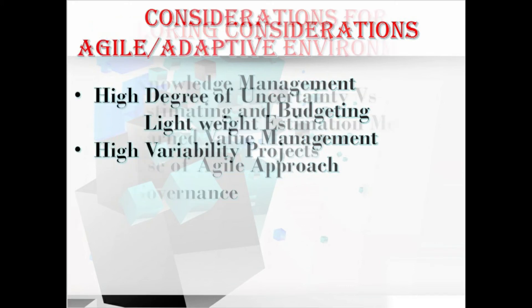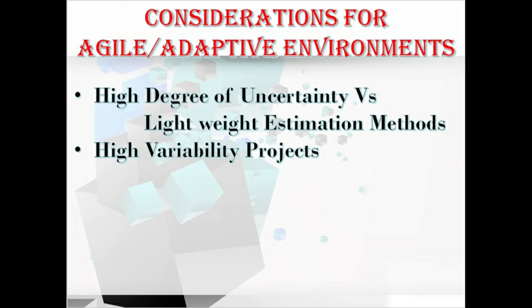Let's look at considerations for agile or adaptive environments. Projects with a high degree of uncertainty — where scope is not yet fully defined — may not benefit from detailed cost calculations due to frequent changes. Instead, lightweight estimation methods can be used to generate fast, high-level forecasts of project labor costs, which can be easily adjusted as changes arise. For high variability projects that are subject to strict budgets, the scope and schedules are more often adjusted to stay within the cost estimates.